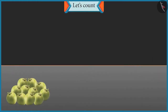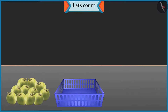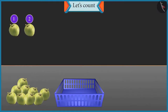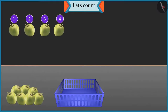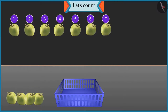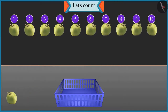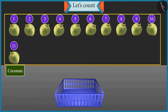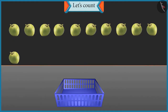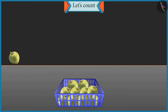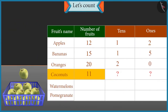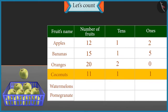Now count these coconuts and place them in the basket. One, two, three, four, five, six, seven, eight, nine, ten and eleven. So how many groups of ten coconuts are there and how many single coconuts are left? There is one group of ten coconuts and one single coconut left. So it will be one tens and one ones in eleven. Absolutely right.